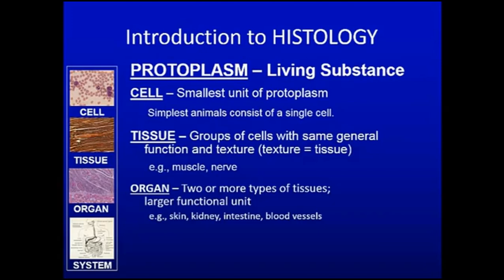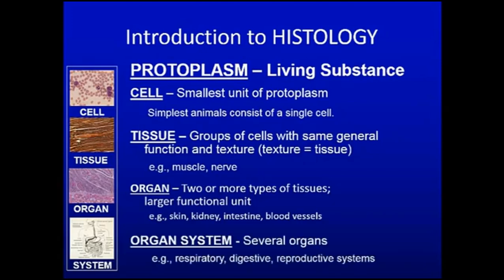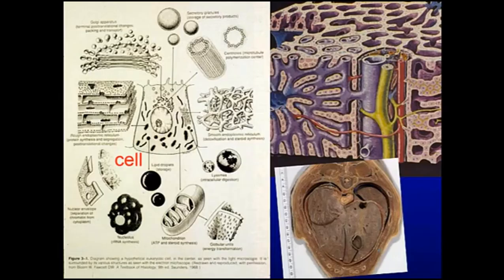Organs include skin, kidney, liver, and blood vessels. Groups of organs make organ systems — the respiratory, digestive, reproductive, and nervous systems.